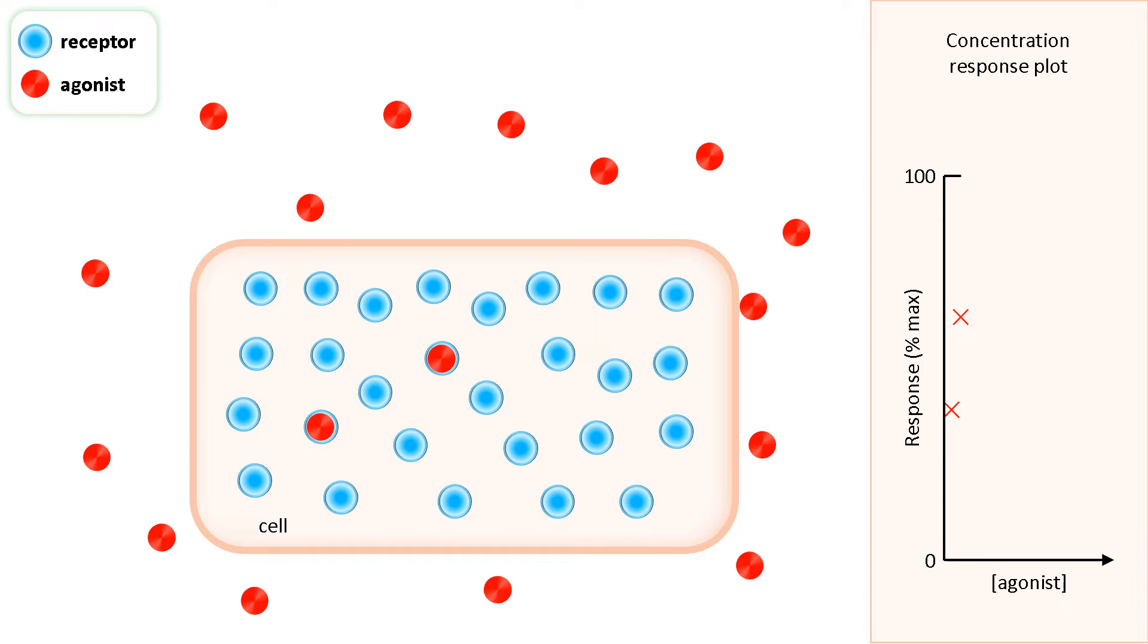Doubling the concentration of agonist molecules again results in more agonist molecules binding to free receptors, and the amplitude of the response is increased again as shown by the red cross on the graph.